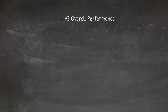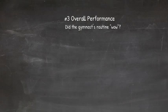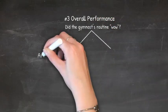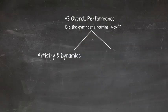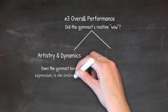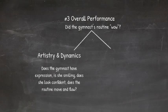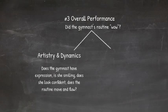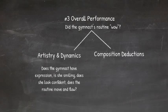The third thing judges look for is the overall performance — did the routine wow? Think of Caitlin Ohashi's 10.0 college routine as an example of that wow factor. Judges look at artistry and dynamics: is the gymnast smiling, using her body confidently, is there expression? Is the routine constantly flowing or are there pauses, because pauses are deductions. Judges use artistry and dynamics deductions to differentiate gymnasts who may have had similar execution scores.